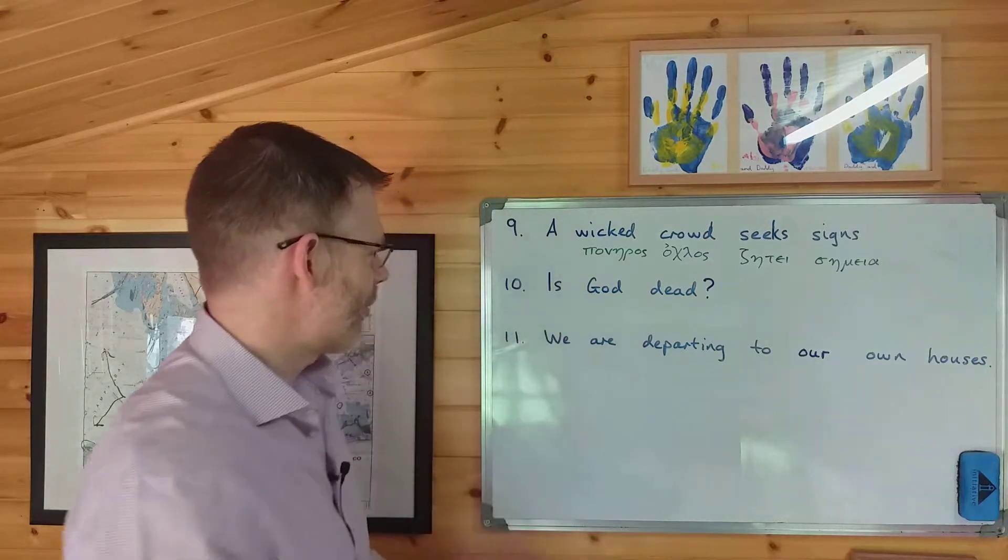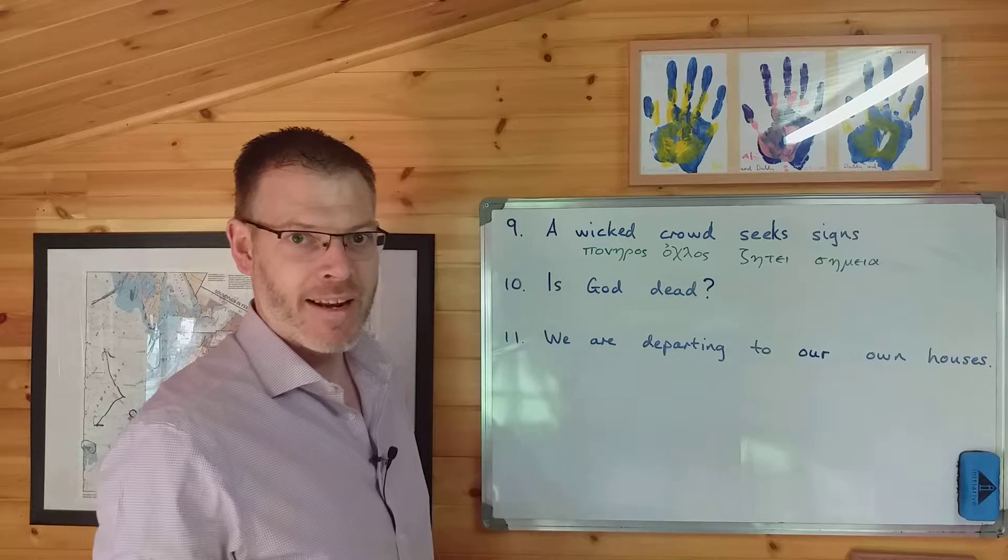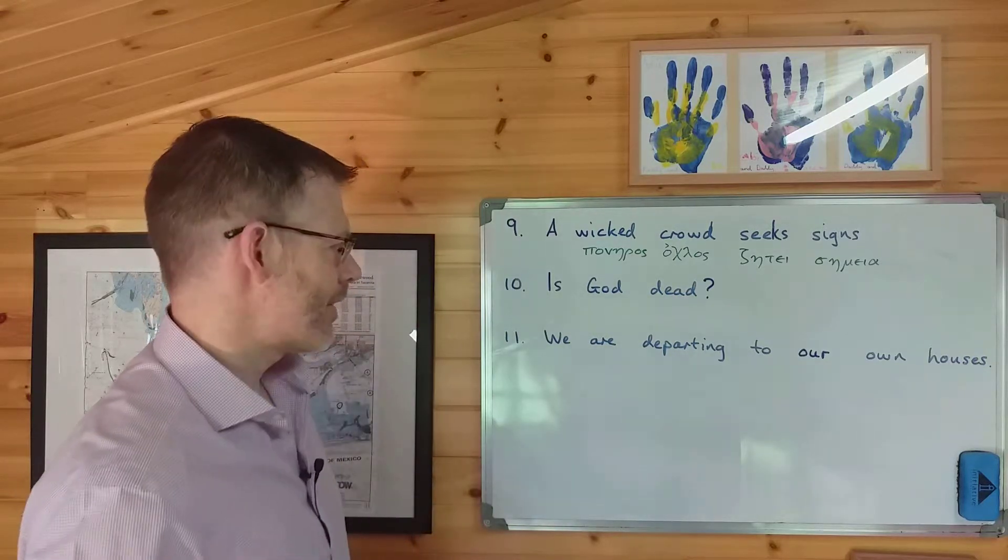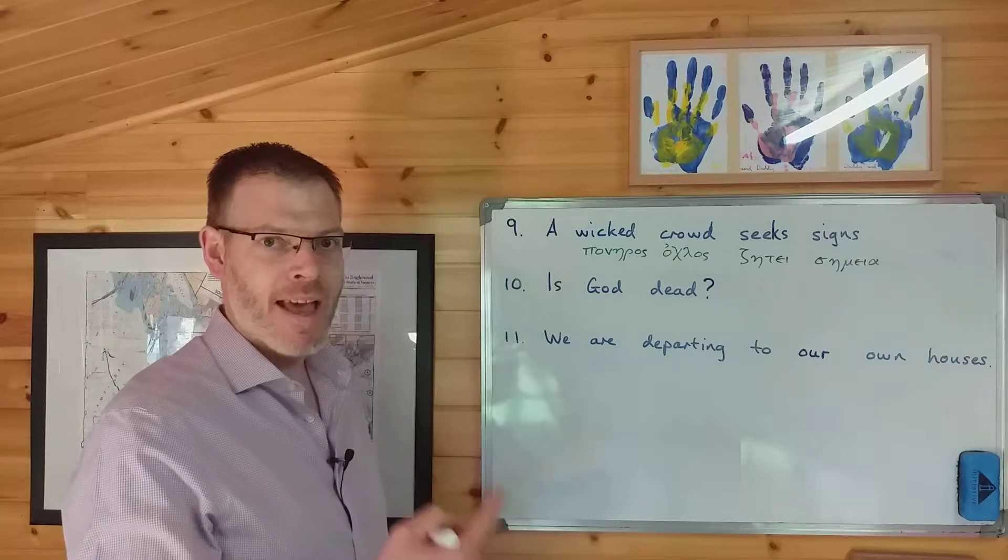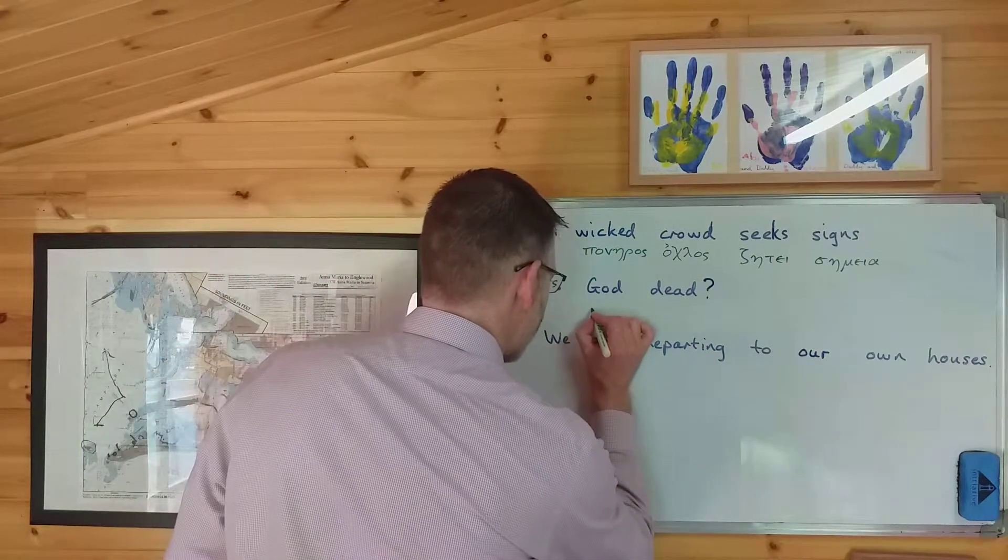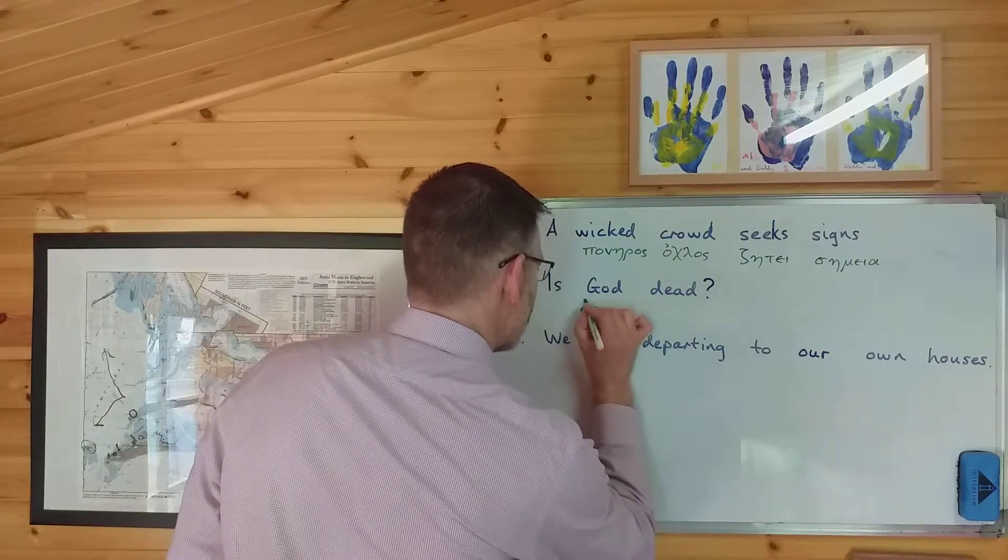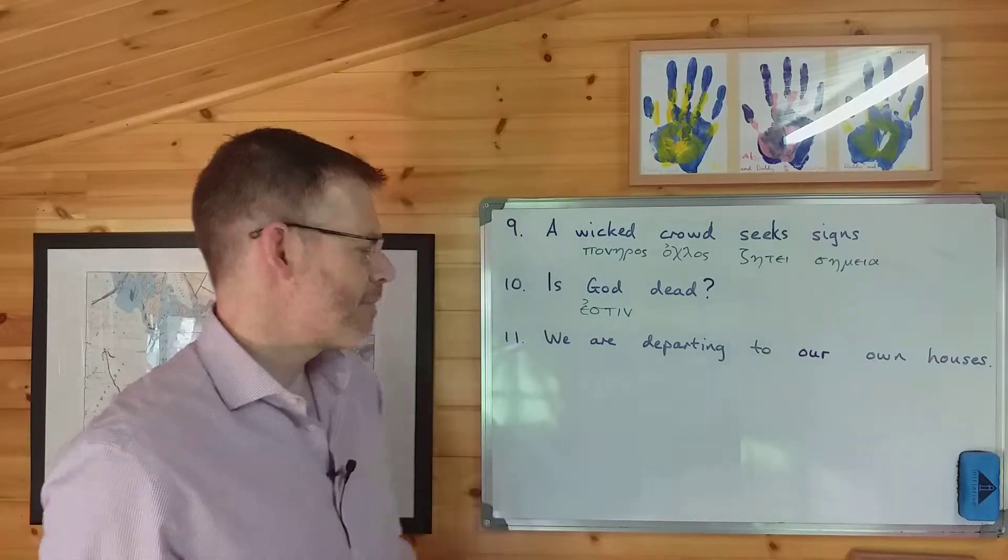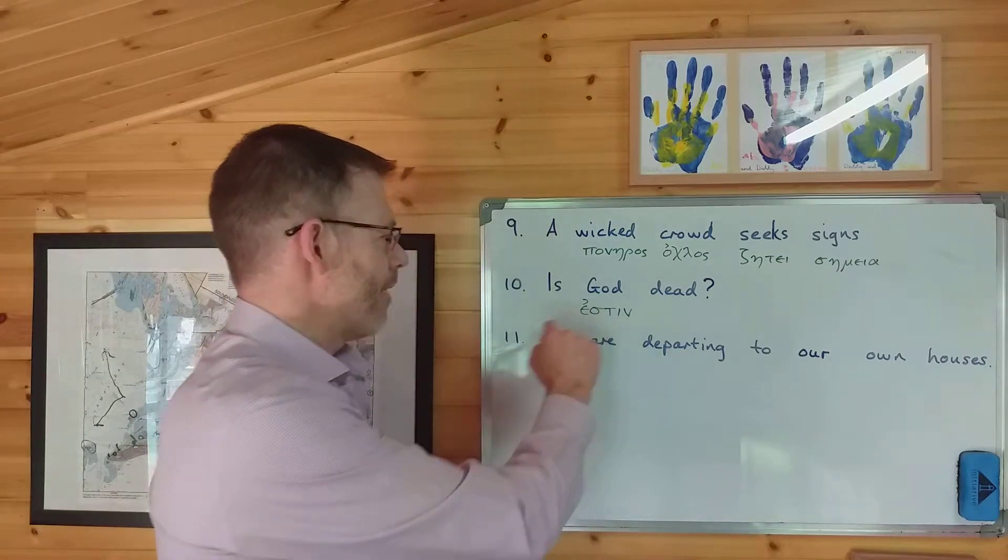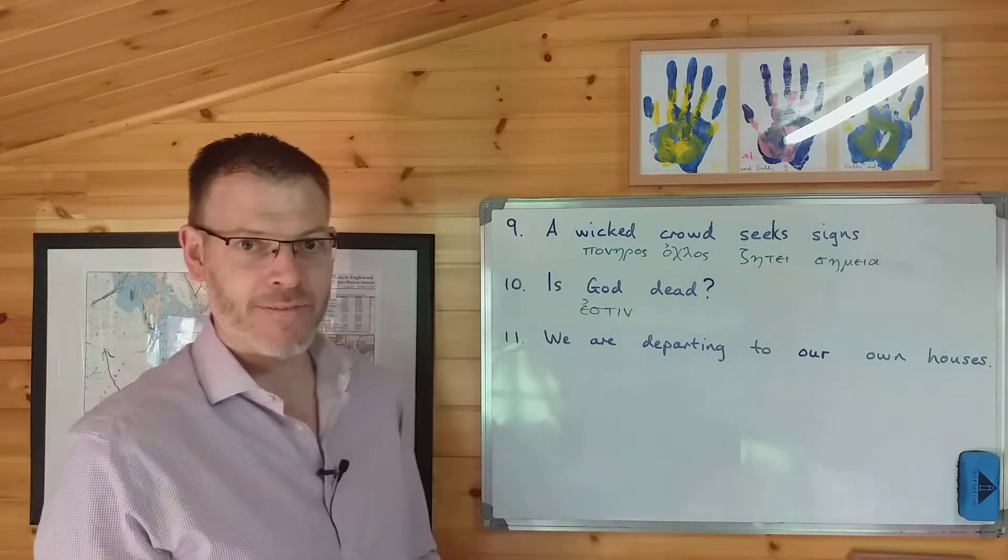So is God dead? Let's find the verb first. The verb is is, and it's third person singular of I am. I am, you are, he is. Emi, estin. So let's pop that in. Estin, emi, estin, esmen, este, aisin. This is the third person singular, meaning he is. So that's the verb.